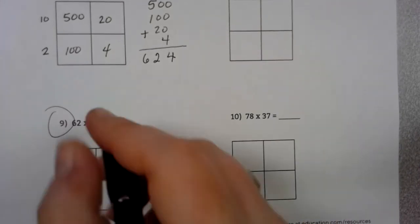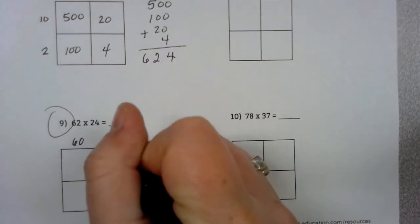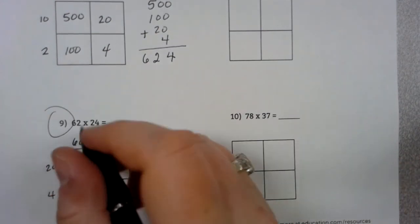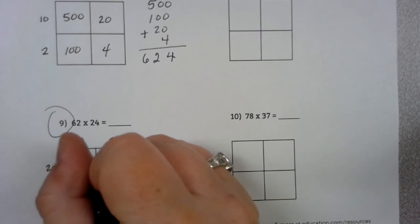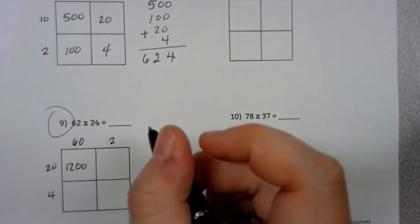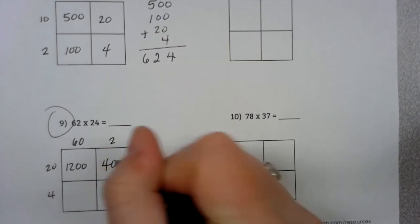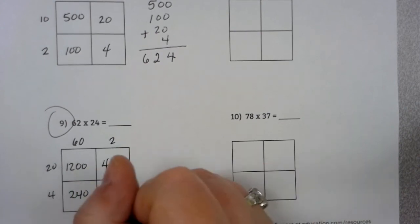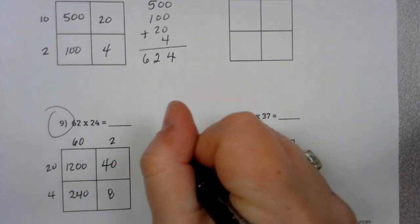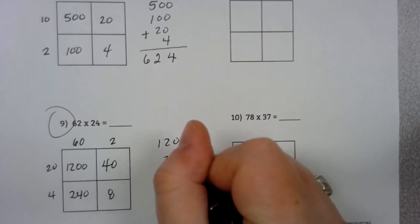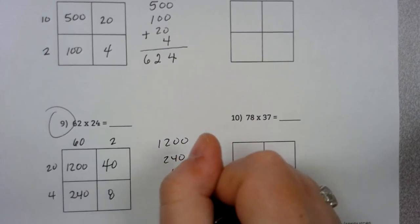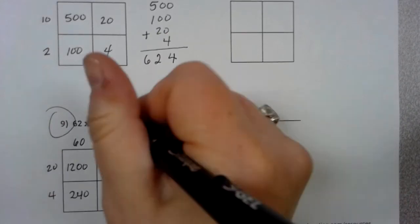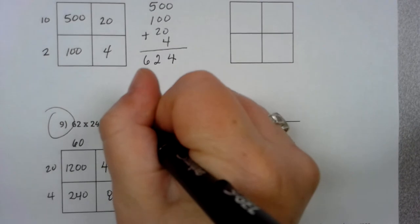Number 9. 62 times 24. I have my 60, then my 2. My 20, then my 4. 2 times 6 is 12. I have my two zeros. 2 times 20 is 40. 4 times 6 is 24, with 1 zero. 4 times 2 is 8. So, 1,200 plus 240 plus 40 plus 8. So 8, 8, 4, 1. 1,488.